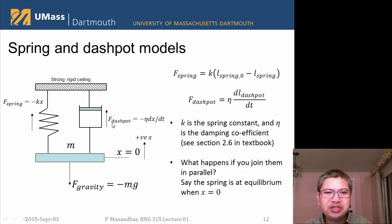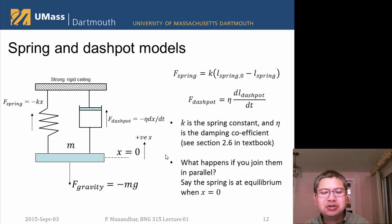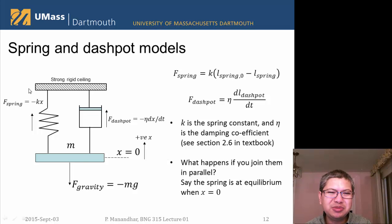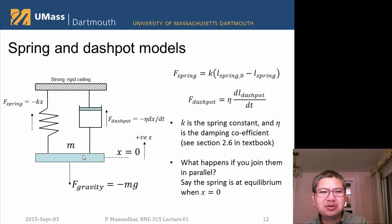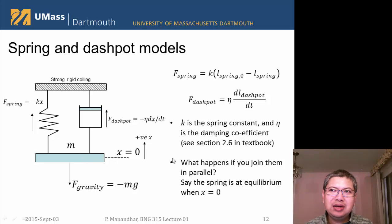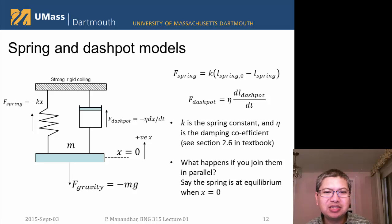If you join the spring and dashpot in parallel, what can you say about the system — can you write an equation? I did the parallel case first because in this situation both elements share the same displacement, which makes it easier to handle. The textbook also discusses the series case with an additional spring in parallel, called the Kelvin model, which is widely used in biomechanics and other viscoelastic material analysis as a starting point. For simplicity, I'm using this simplified parallel model here.